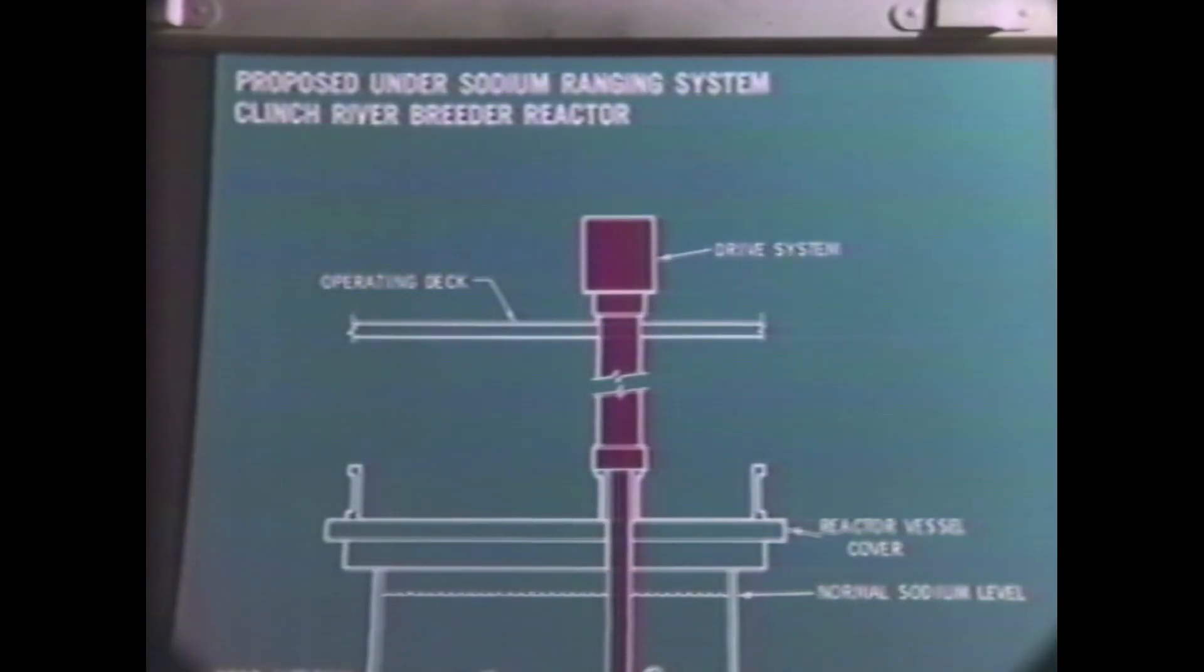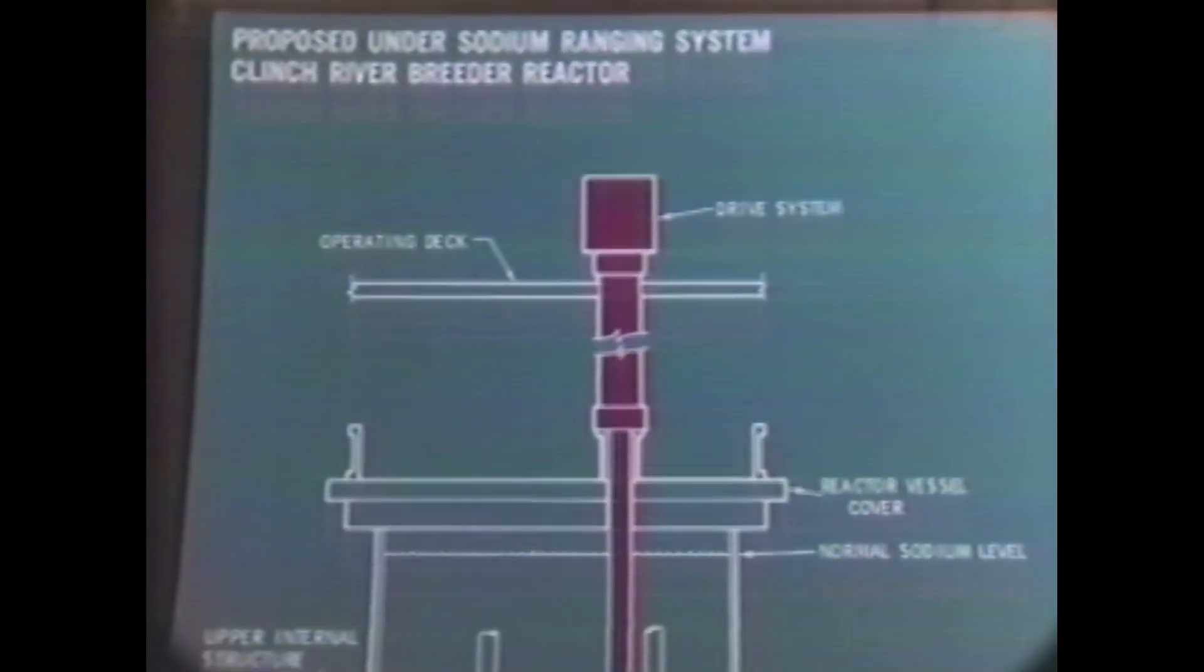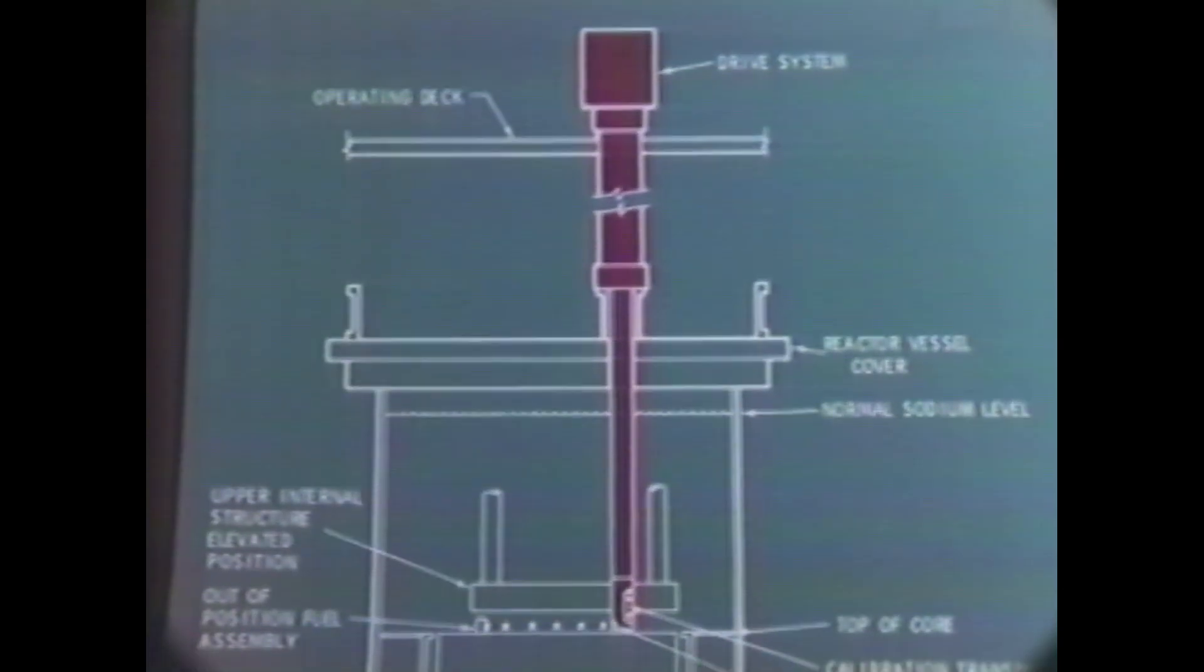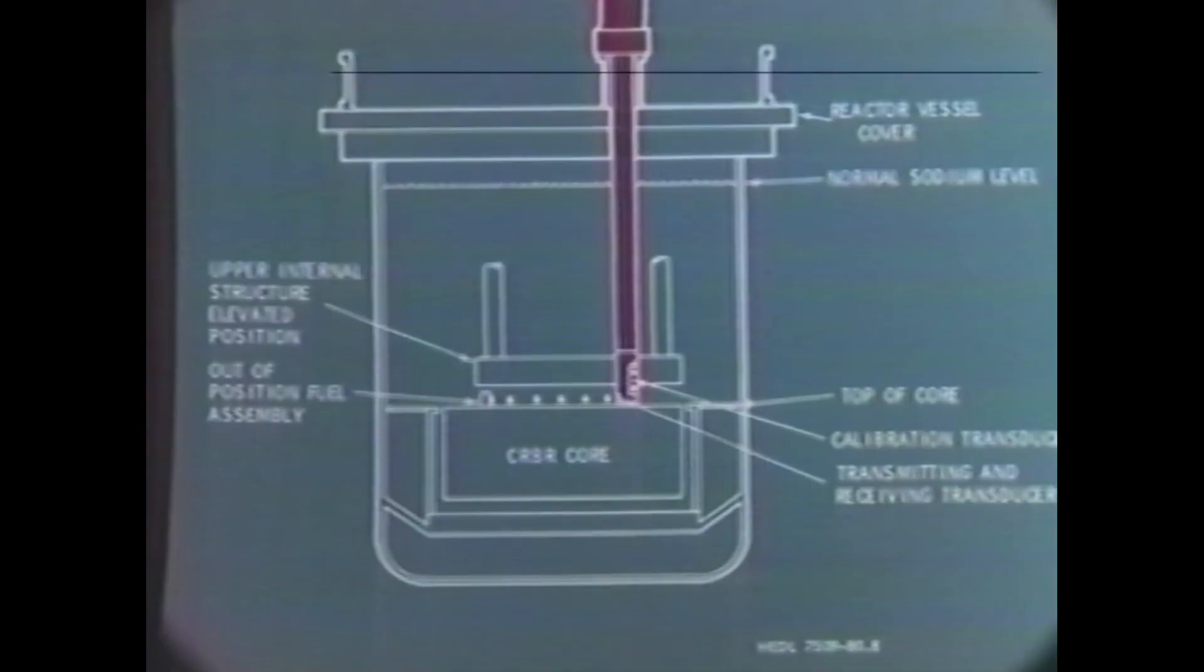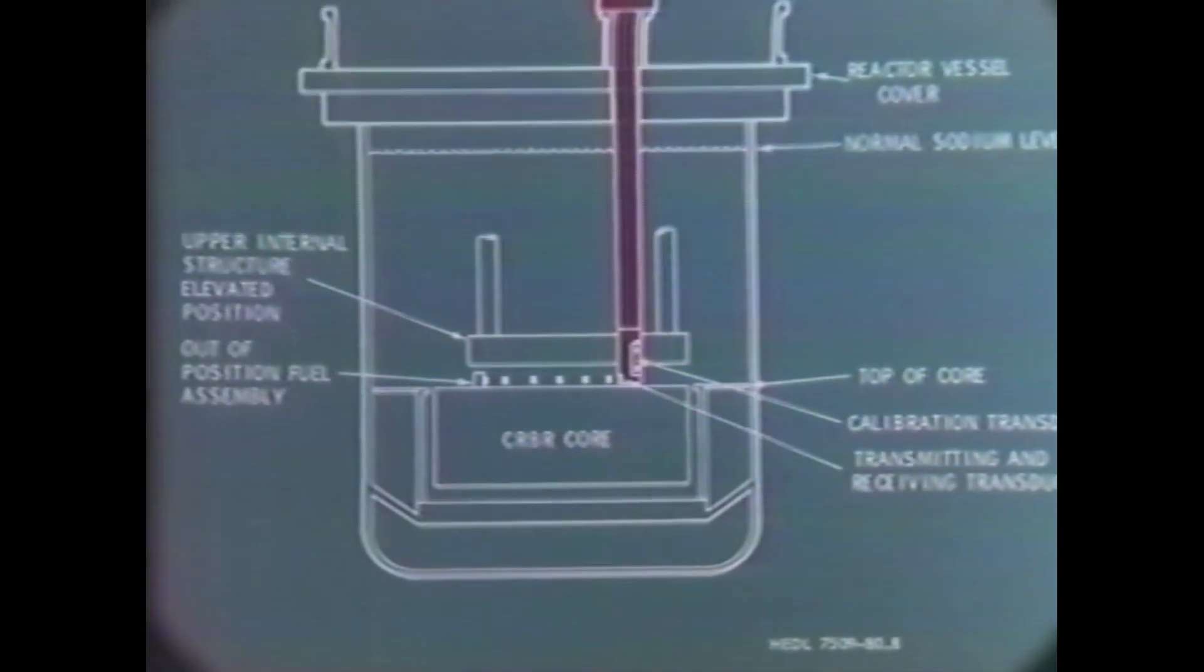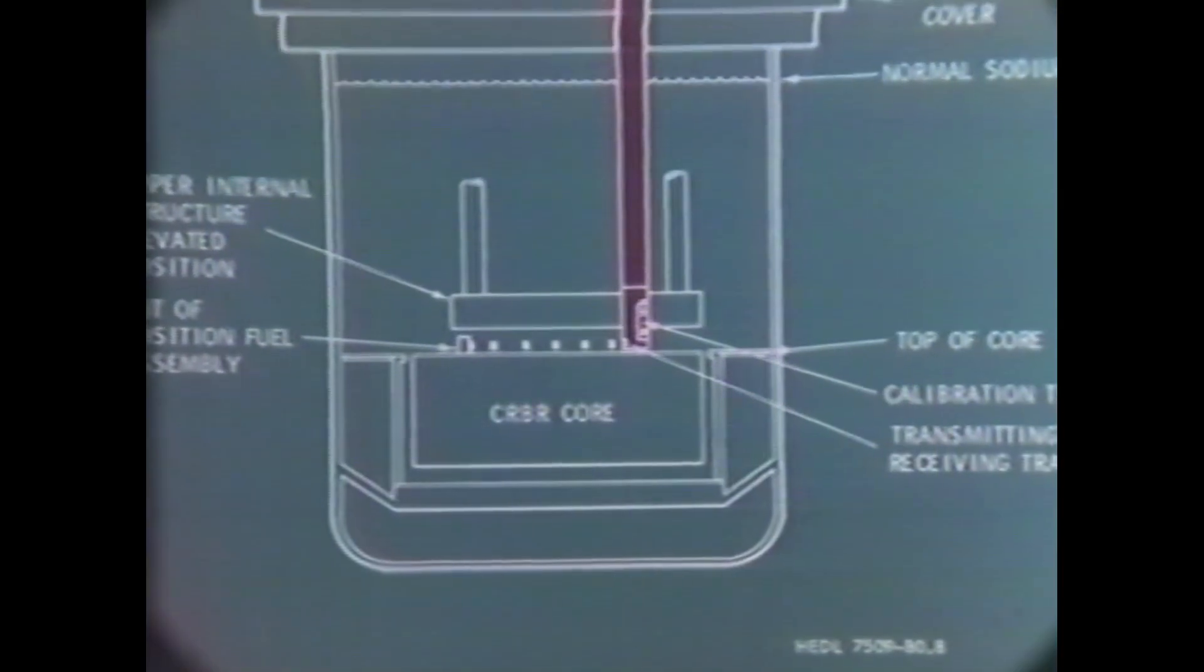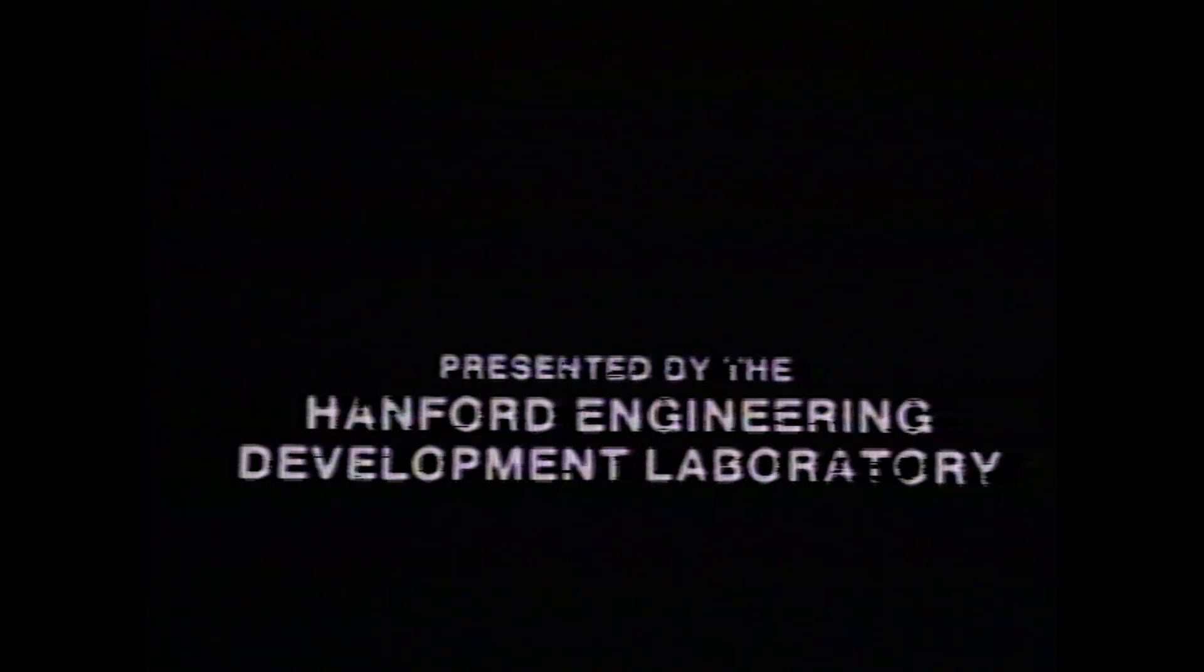An ultrasonic sweep arm based on this technology has been proposed for use in the Clinch River Breeder Reactor during each refueling operation. Such a system would locate out-of-position core components to prevent damage during refueling.